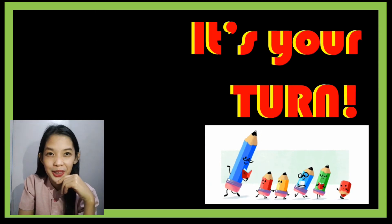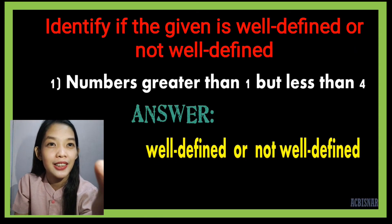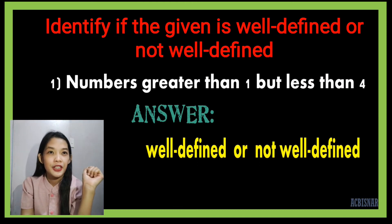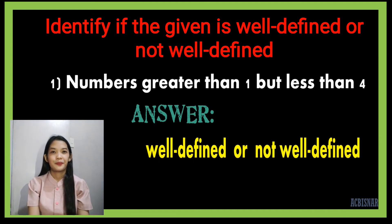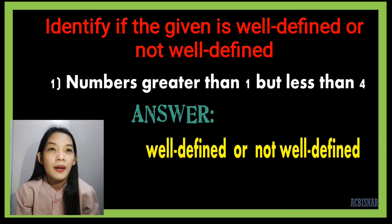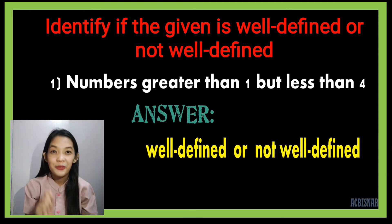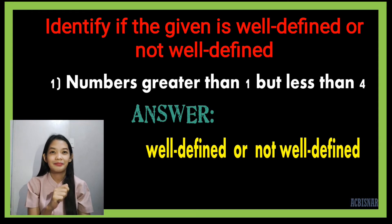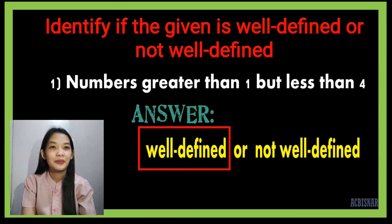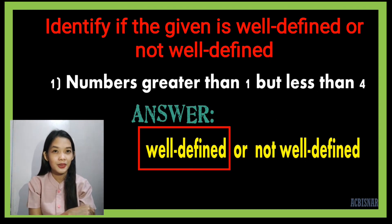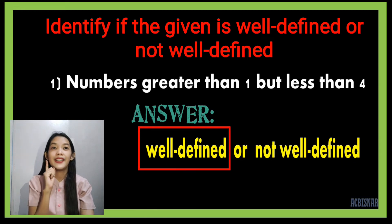Now it's your turn. Identify if the given is well-defined or not well-defined. For number one: numbers greater than one but less than four. The answer is well-defined, because we can easily say the numbers greater than one but less than four, and those are two and three.